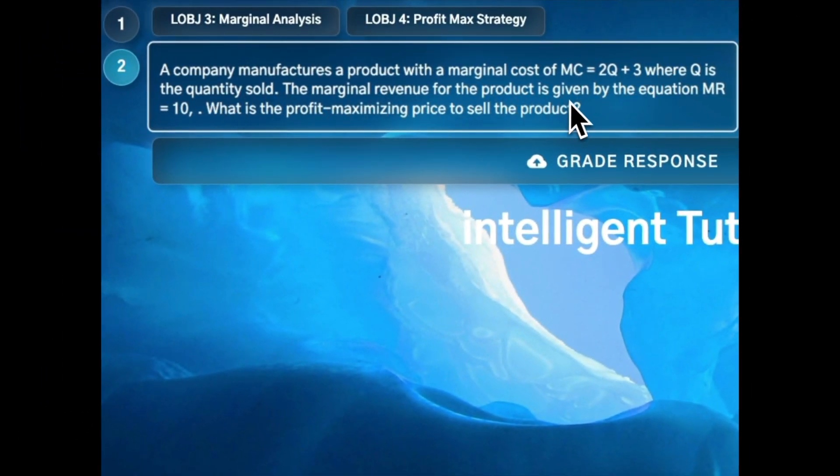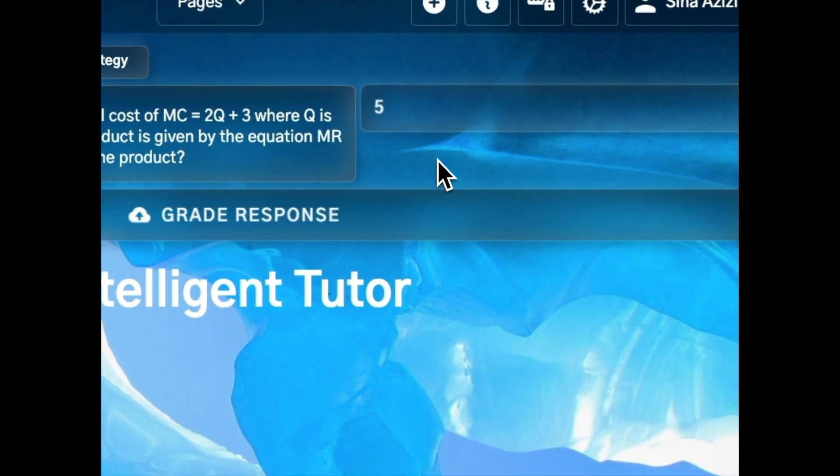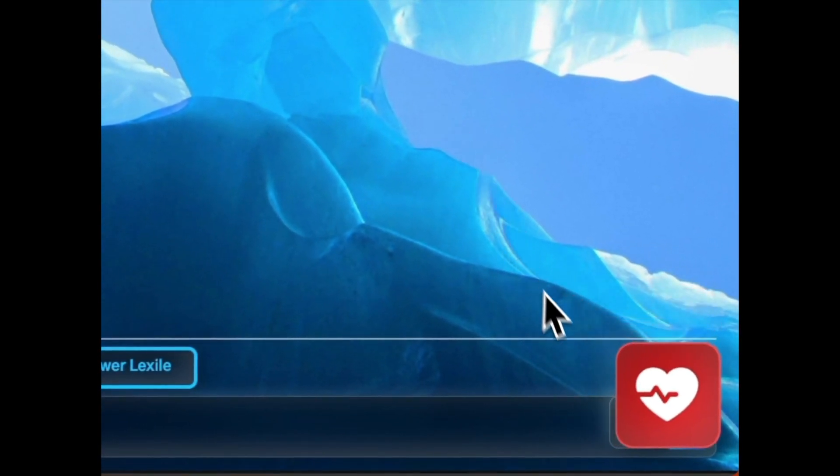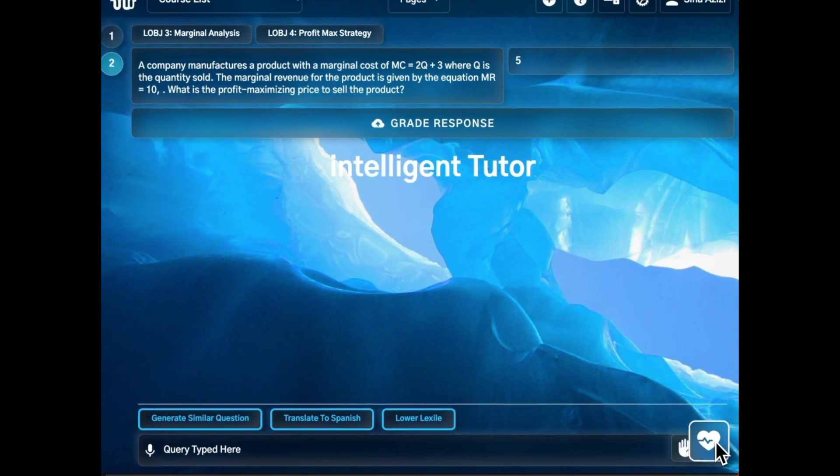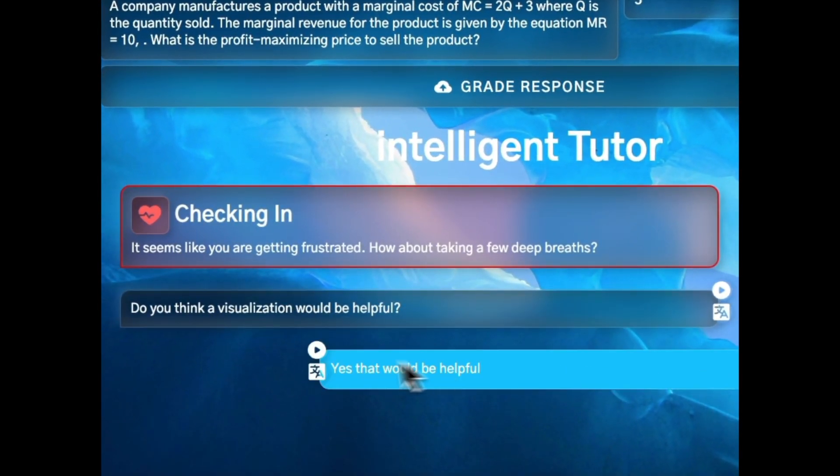Now let's look at a question from economics. If learners cannot respond correctly more than once, the heart agents will become visible, suggesting strategies to enhance learner well-being and guiding them with visual and verbal hints.